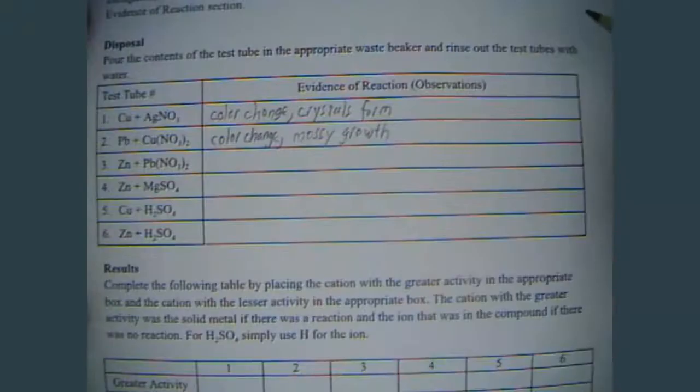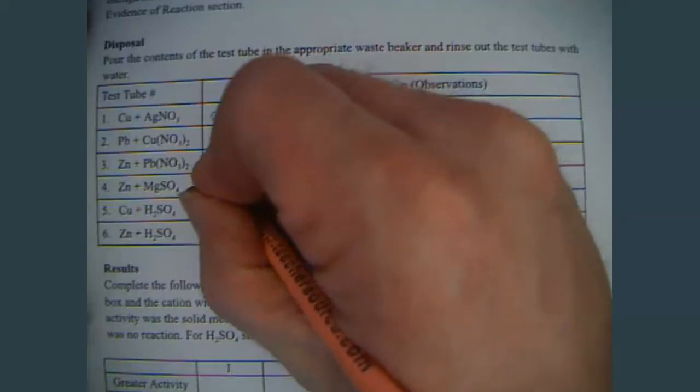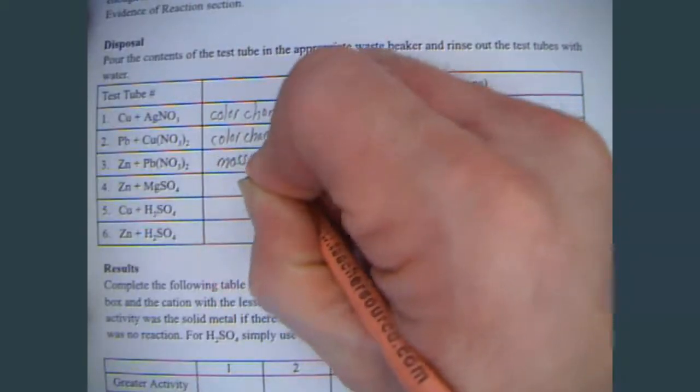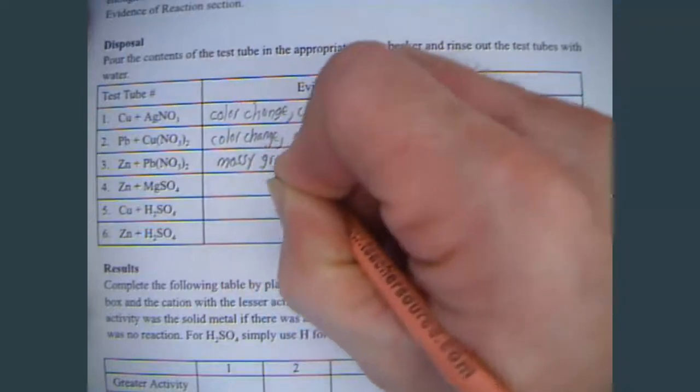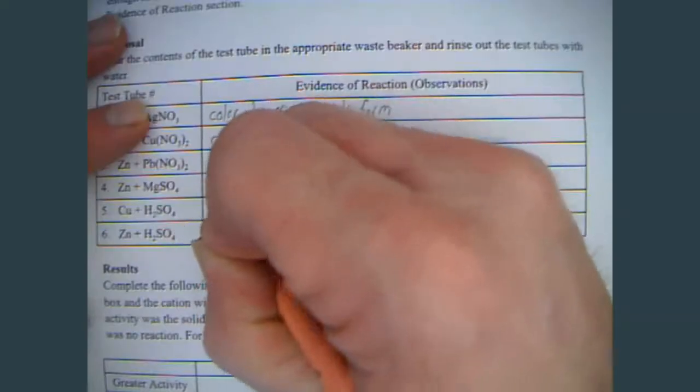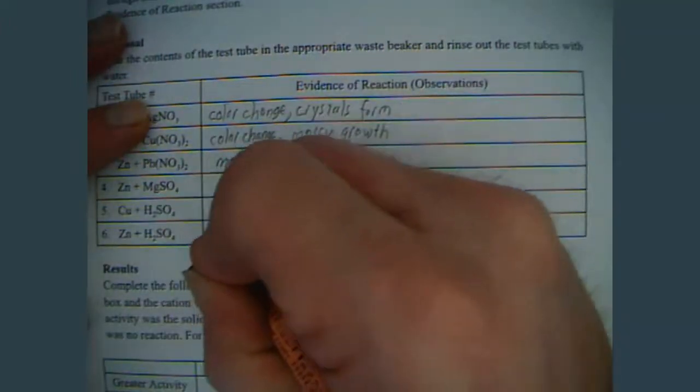For the third one, we had the zinc and the lead nitrate. And again, in this case, it looked like we had a change. So, we had a mossy growth again. Not too much of a color change in that one, though. They're both colorless. This one, we had no reaction. This one, we had no reaction. And then, the zinc and the sulfuric acid, we had bubbles.